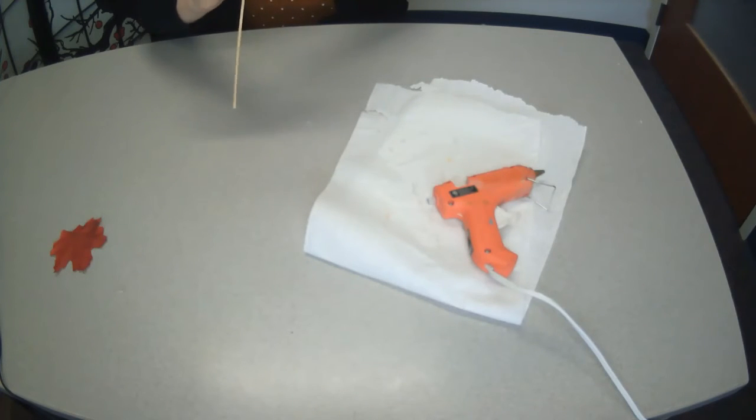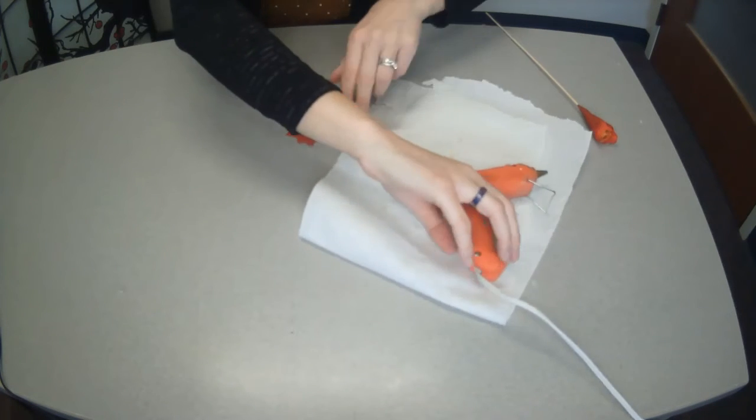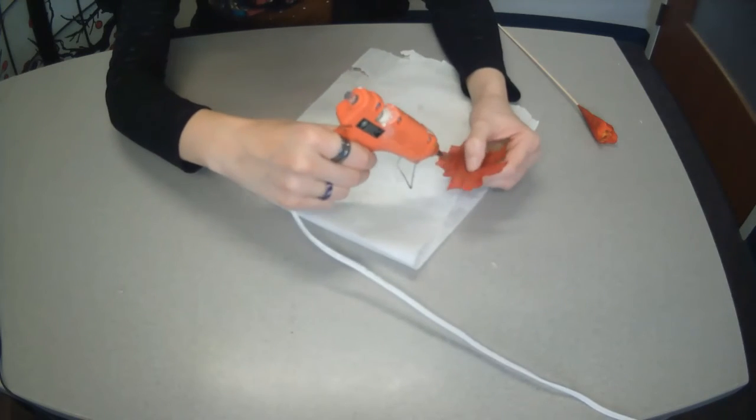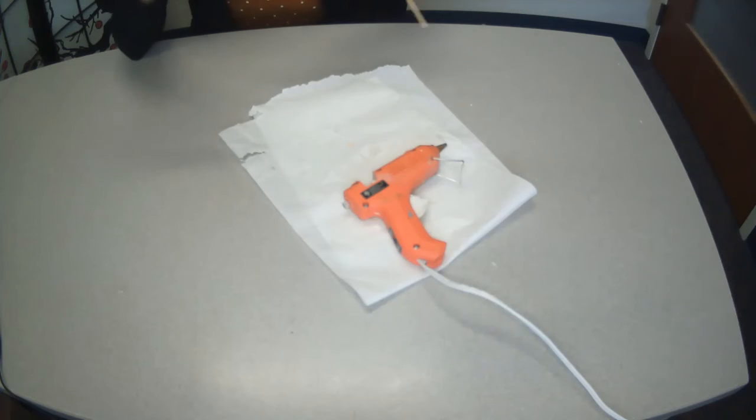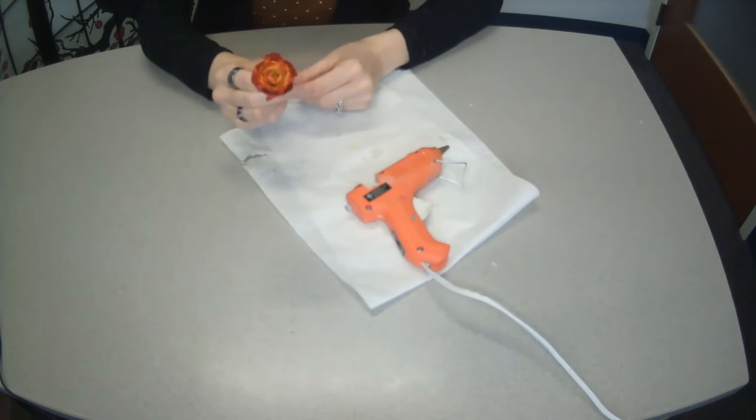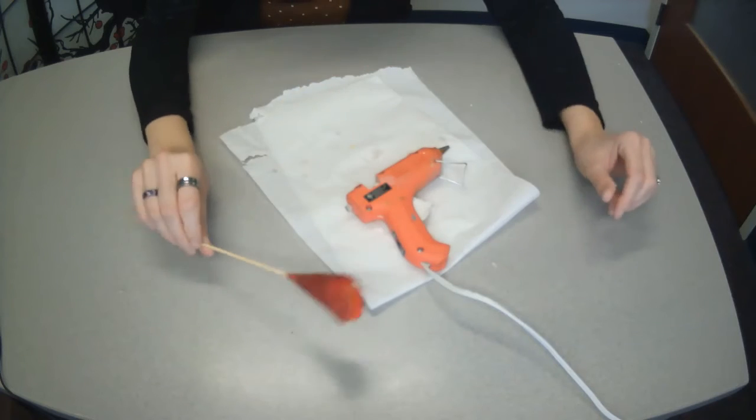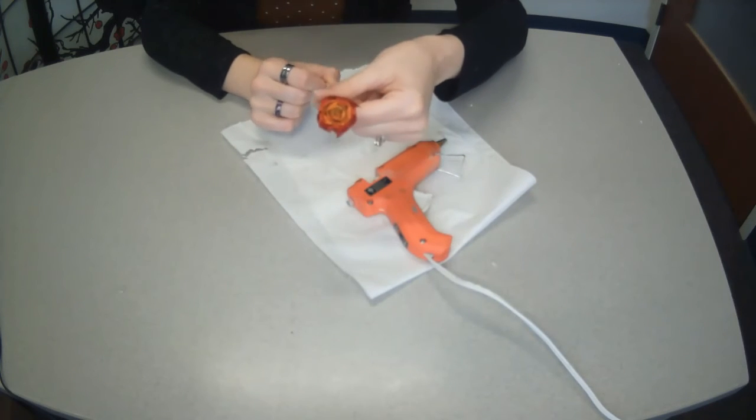And the third one, just put wherever you feel like it should go. I'm gonna put it kind of over here, I think, would be pretty. I'm also gonna put it up a little higher to get a little more dimension to it. I also did a little darker red this time, which is kind of neat. Wrap and wrap. And there you go. That is a completed leaf rose.